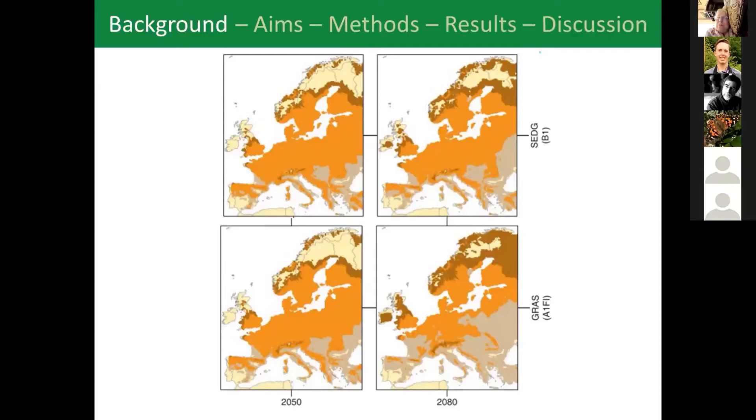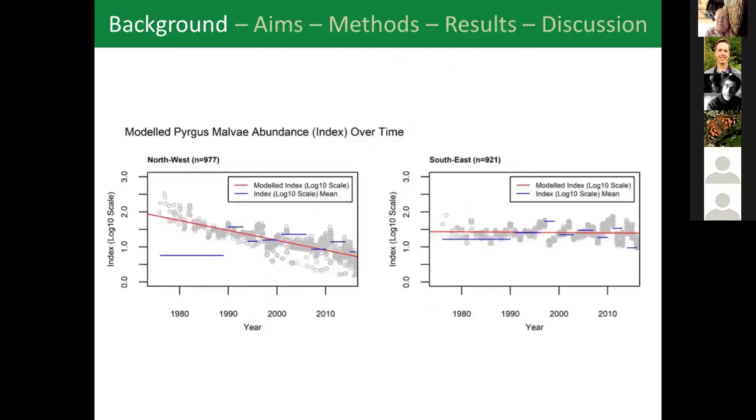Because we were interested in this we did a study looking at population trends of the grizzled skipper to see in the north do its population trends look more positive, is that a sign it could be about to expand. But what we actually found is that the trends in the north appear to be more negative than in the south. You can see here there are two figures - on the x-axis it's the year and on the y-axis it looks at the index from the UK BMS population size over time. What you can see is that based on our model in the northwest the trends appear to be steeper than in the south. It looks like trends are actually more negative in the north which would run contrary to the suggestion that they might be about to expand.